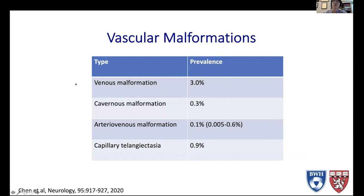AVMs are one of the four major types of vascular malformations found in the brain. The most common type would be a venous malformation, such as developmental venous anomalies, with a prevalence of about three percent of the population, to less common things like cavernous malformations and capillary telangiectasias. Arteriovenous malformations are actually the least prevalent, making up roughly 0.1 percent of the population, although the number varies widely — anywhere from 0.005 to 0.6 percent depending on the paper.